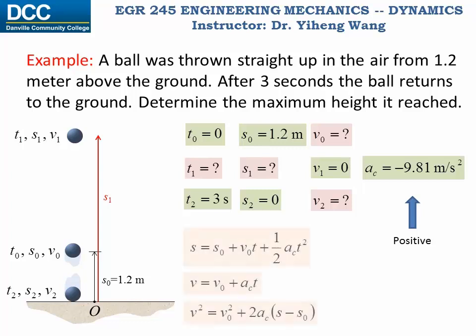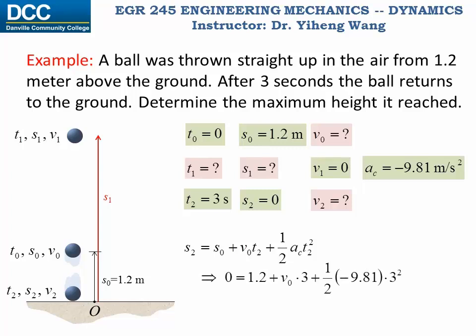Don't forget we have three equations to use. By examining the known information, it seems that we need to solve this problem in more than one step. There are different approaches, and this is what I did. I applied the first equation between the initial position and the final position, and solved for the initial velocity to be 14.3 meters per second.